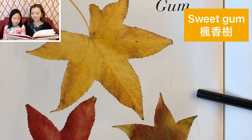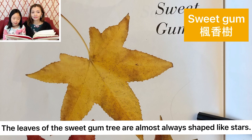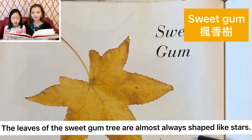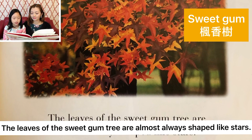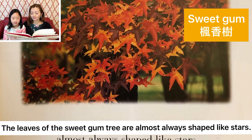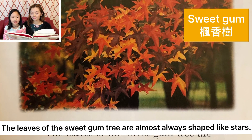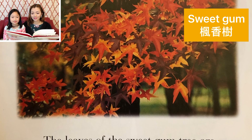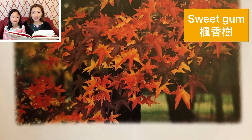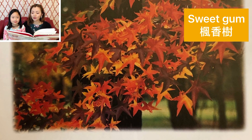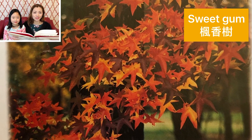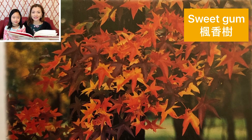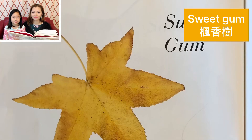The leaves of the sweet gum tree are almost always shaped like stars. 枫香树。枫香树的树叶永远都是像一个星星的形状。